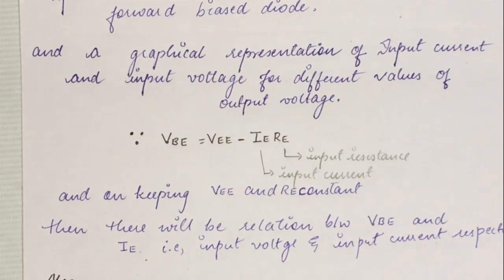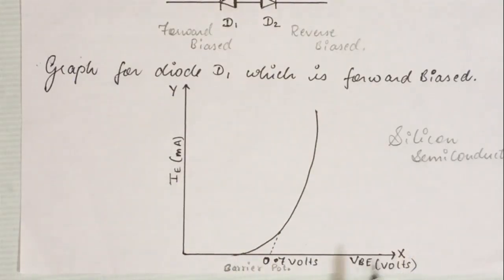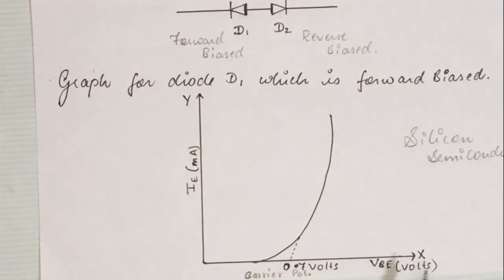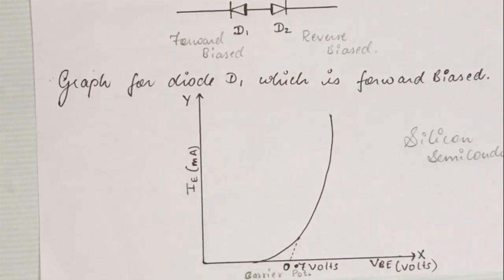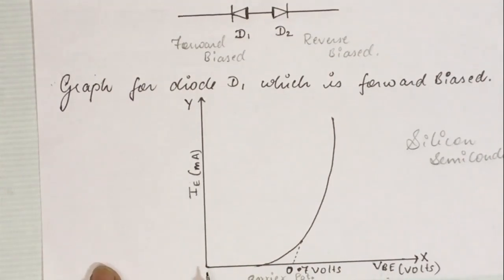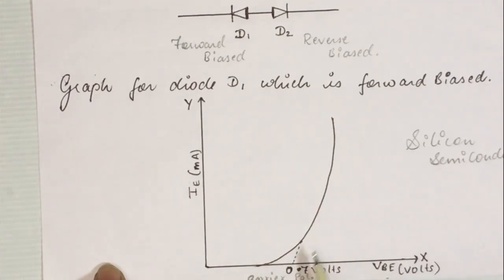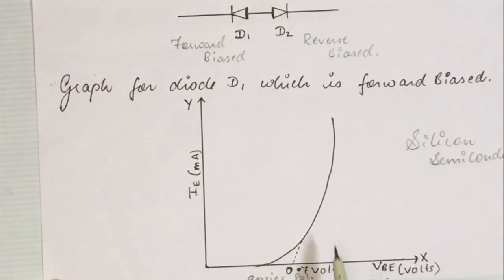The input characteristic curve gives us information about how IE changes with respect to VBE. It is a graphical representation of the relation between VBE and IE. In this graph, the input voltage VBE is taken on the X-axis measured in volts, and input current IE is on the Y-axis measured in milliamperes. When VBE equals 0, IE is also 0. As we increase VBE there is no change in IE until a certain point, after which IE increases exponentially. This point represents the barrier potential, which is 0.7 V for a silicon BJT.